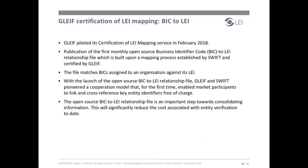In February 2018, GLEIF and SWIFT introduced the first open-source relationship file that matches a business identifier code, or BIC, assigned to an organization against its LEI. The BIC is an international standard developed by ISO for the identification of institutions within the financial services industry. SWIFT is the registration authority for the BIC standard appointed by ISO — receiving BIC registration requests, assigning a BIC, and publishing the related BIC data record. The BIC-to-LEI relationship file is built upon a mapping process established by SWIFT and certified by GLEIF, published in CSV format and updated on a monthly basis.